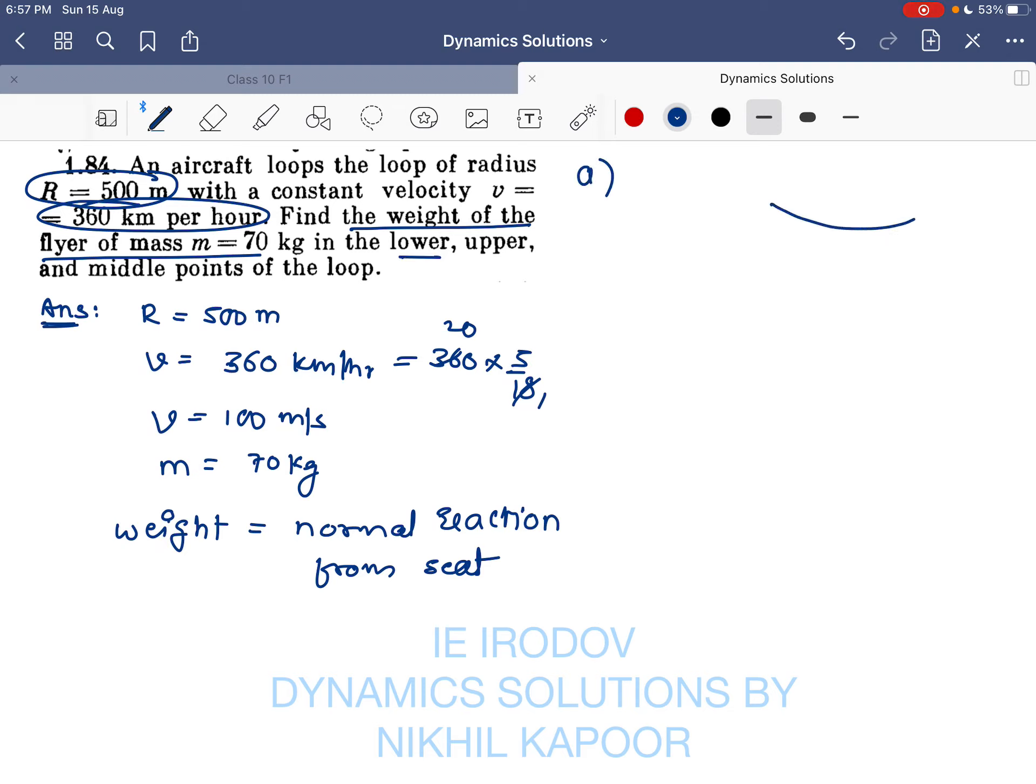So while looping the loop, when the flyer is in the lower point, when the flyer is passing through the lowest point of the circle, its weight will be acting in the downward direction and reaction will be in upward direction. Here, in order to complete the loop, in order to go in the curved path to get the necessary centripetal force, N must be greater than mg, and the difference between N and mg must provide the necessary centripetal force.